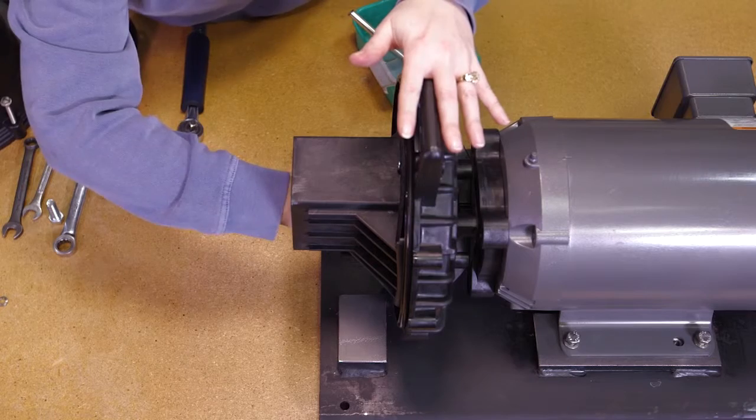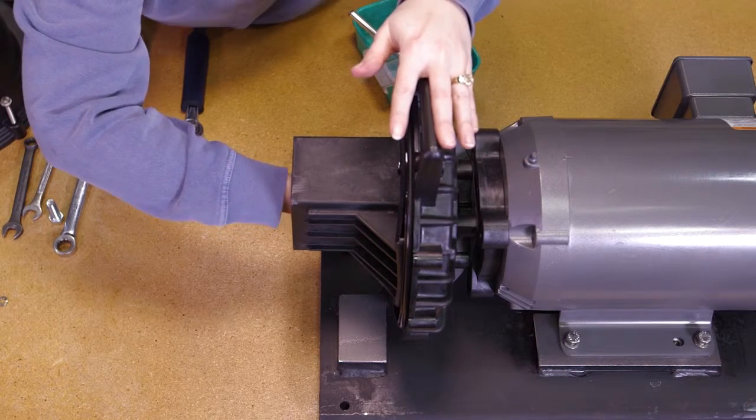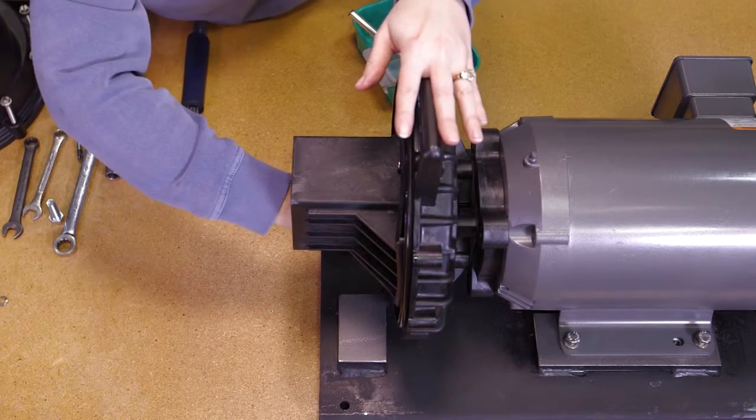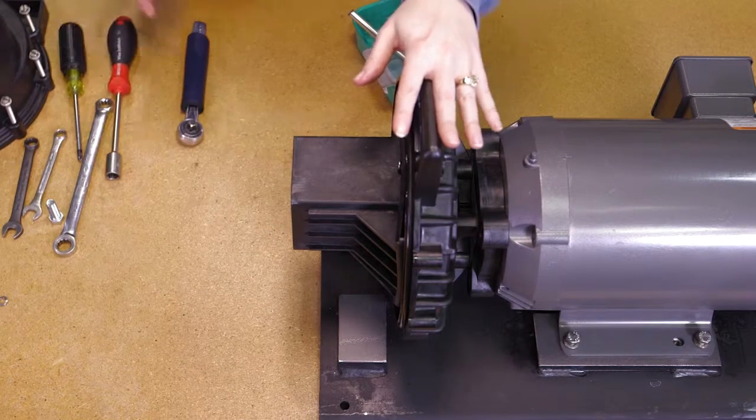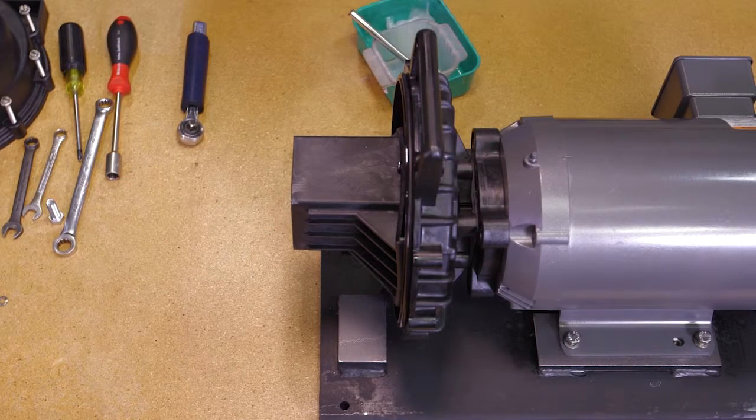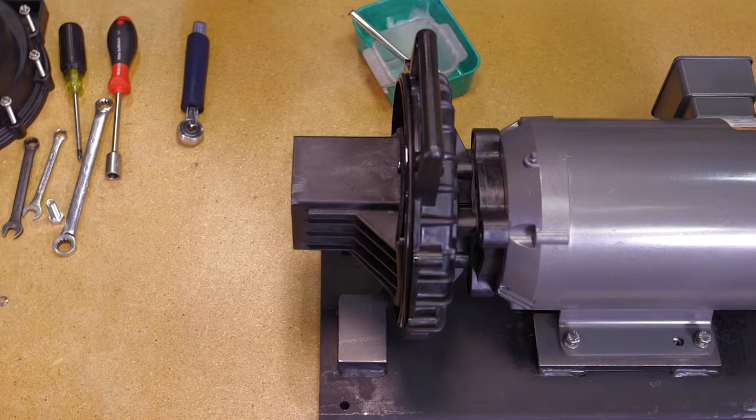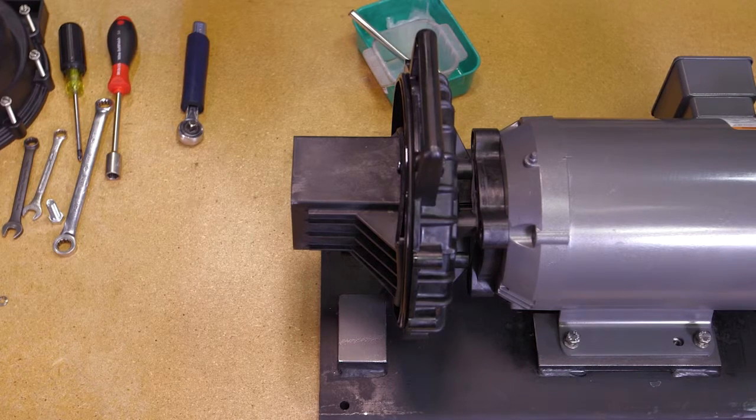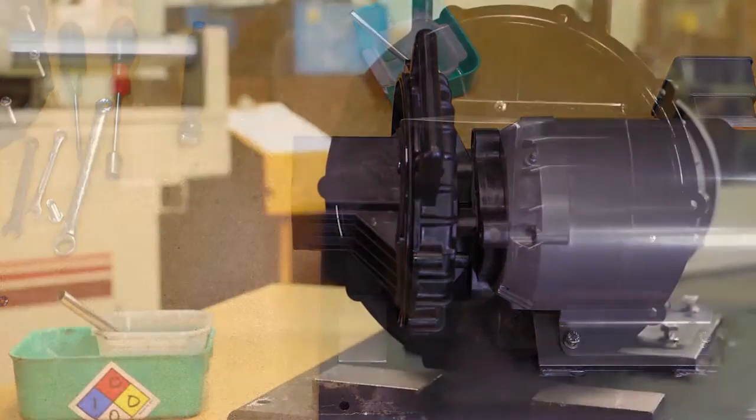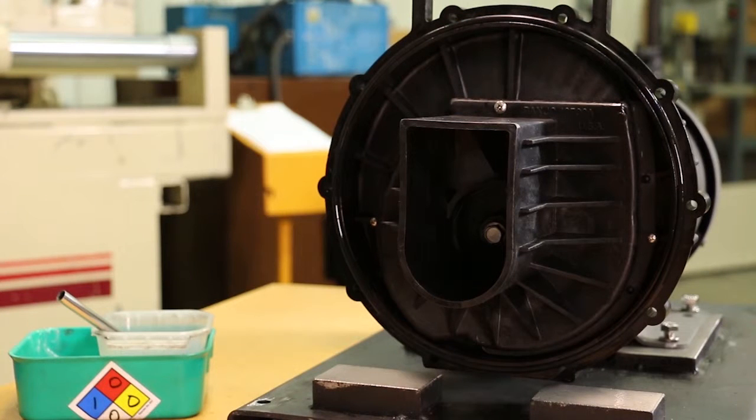The impeller should be turned over a few times by hand to check for clearance between the impeller and volute. A small amount of drag between the impeller and volute or impeller and rear bracket will cause no problem. However, if the impeller will not turn over because of a lack of clearance, a rear bracket shim or impeller shim may have to be used.